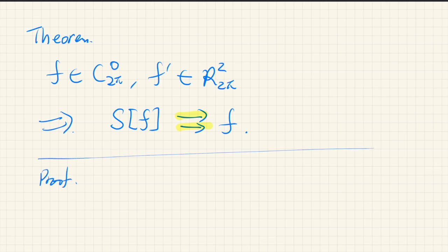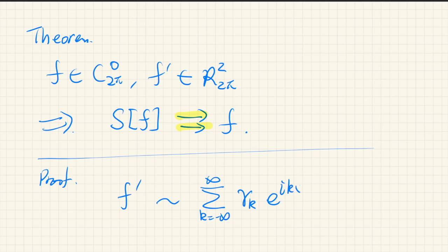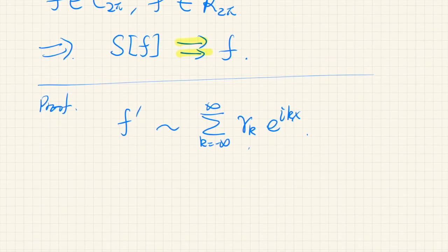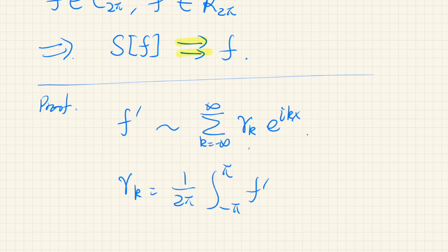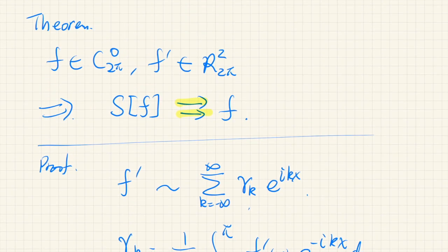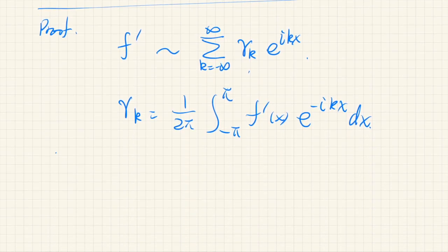First, let us express the Fourier series of the derivative f prime as the sum over k from −∞ to +∞ of γ_k e^{ikx}, where γ_k is the Fourier coefficient of f prime, defined by the integral of f'(x) e^{−ikx} dx.